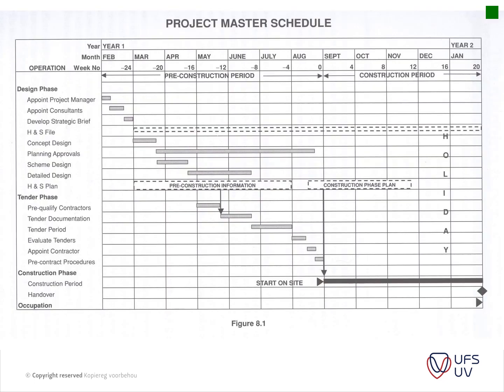Here's an example of a project master schedule. You have your design phase, tender phase, construction phase, and occupation. This is an extract from the book so they're not working on our six stages, but you can use these types of schedules in your different stages as needed. You can see they use negative dates on the timeline up to the point where the contractor gets onto site — that's more advanced and not necessary for you to do.